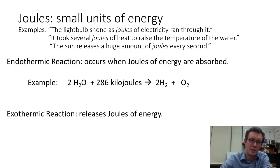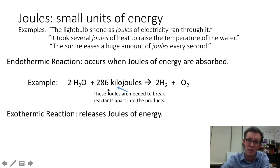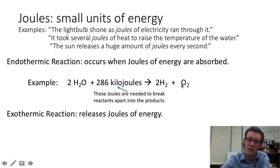So if a chemist wants to show that a reaction is endothermic, they'll simply write the number of joules that the reactants needed to absorb in order for the reaction to occur. You can see that in this example these two water molecules need to absorb 286 kilojoules of energy to decompose into hydrogen and oxygen.